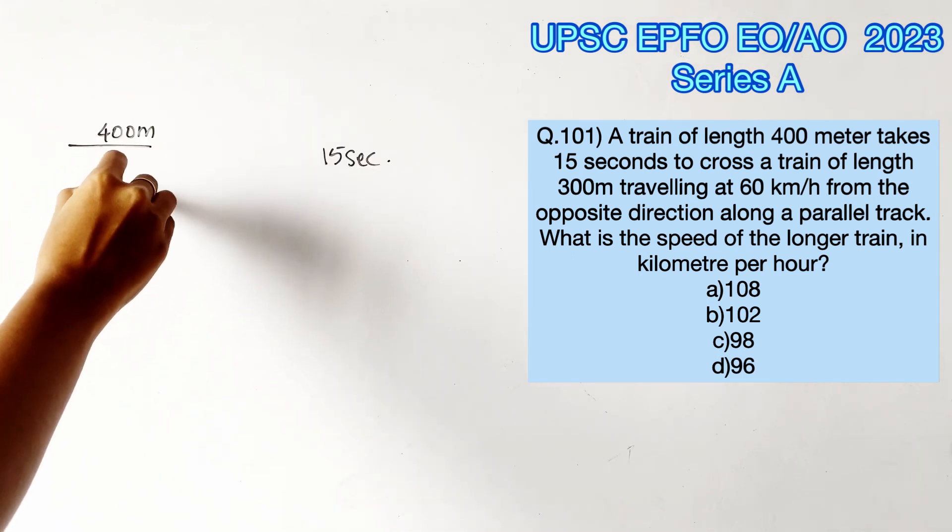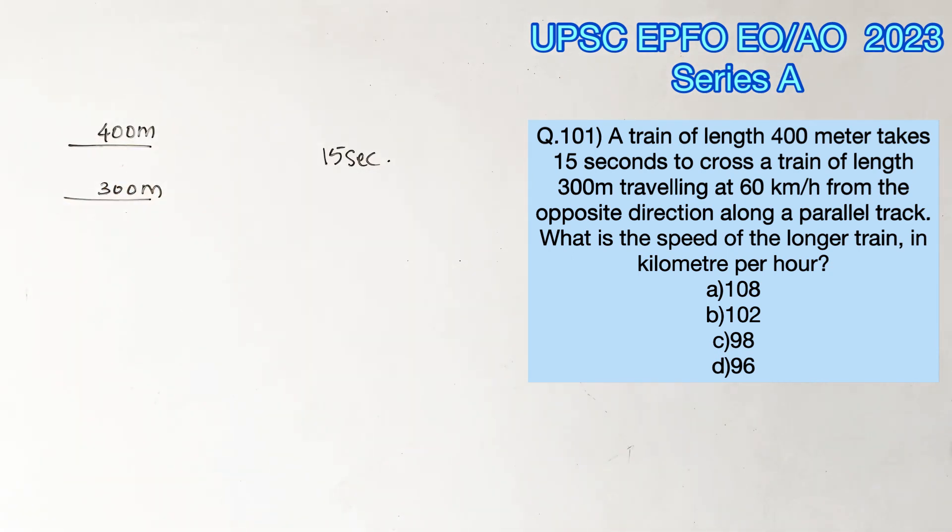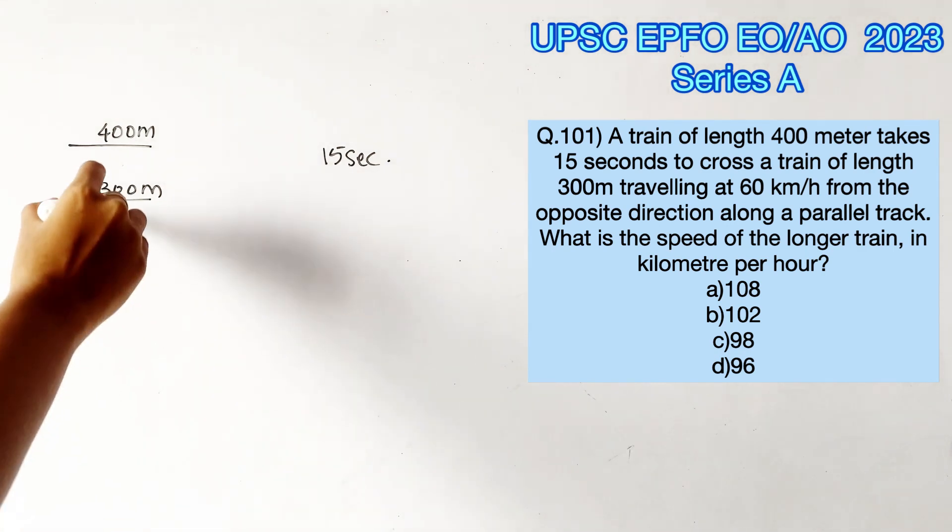A train of length 400 meters takes 15 seconds to cross a train of length 300 meters traveling at 60 kilometers per hour. What is the speed of the longer train in kilometers per hour?